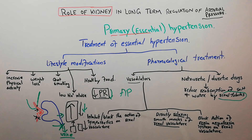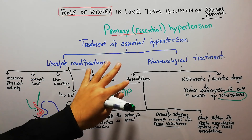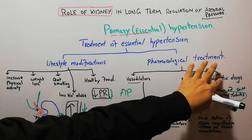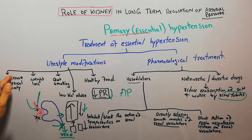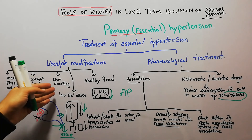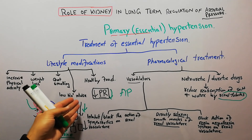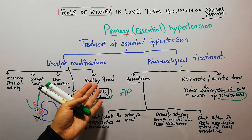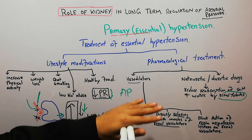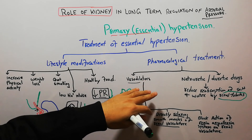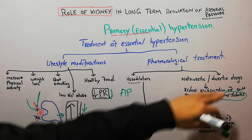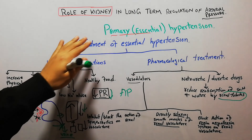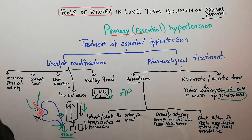In summary, treatment options for essential hypertension are classified into two broad categories: lifestyle changes and pharmacological treatment. Lifestyle changes include increasing physical activity, weight loss, quitting smoking and alcohol, decreasing salt intake, and increasing healthy food intake. Pharmacological options are further classified into vasodilator drugs and natriuretic and diuretic drugs. These topics will be discussed in detail in pathology and medicine lectures.